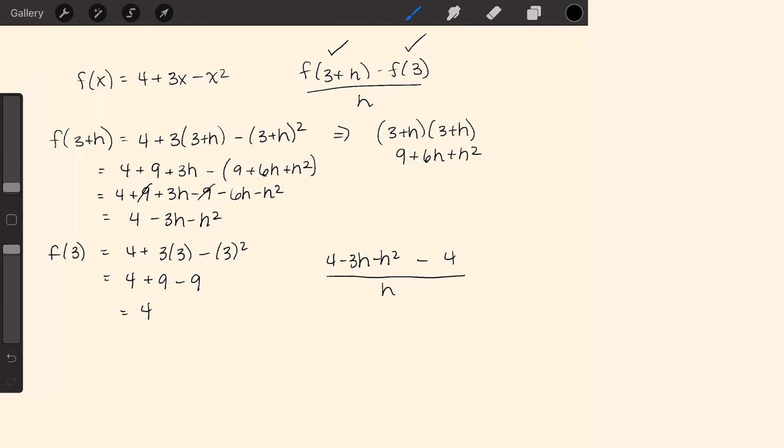Now to simplify our answer, the 4s will end up canceling. We're left with negative 3h minus h squared over h. We can pull out an h from the numerator.